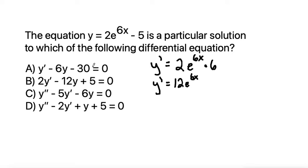For our first answer choice, we only have a y prime, we don't have a y double prime, so we could start by substituting into this first one and see if it's correct. So plugging in y prime would be 12e to the 6x and then bring down the minus 6. We need to multiply that by y, but since we plugged in y prime in terms of x, let's do the same for y and write it as times 2e to the 6x minus 5. And then the next part is minus 30 equals 0.